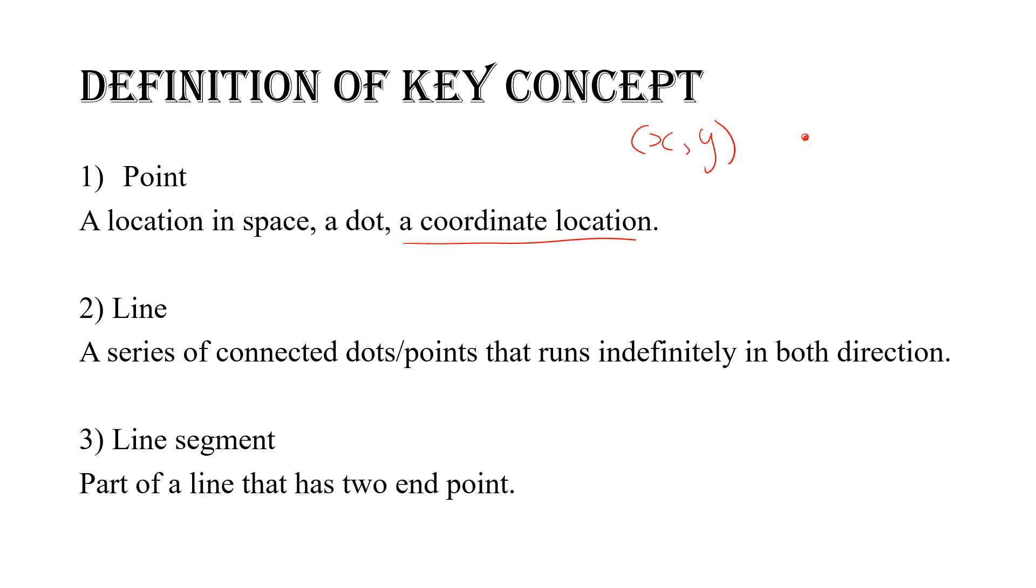A line is a series of connected dots or points that runs indefinitely in both directions. So, as I usually tell my students, a line is not something that you could draw. It's not something that you could write. You could try all you want. It's impossible. However, you could represent a line on paper. For example, if you have this line, this is the symbol in domain. It's supposed to be straight-hand sketching here. This is a representation of a line. We could draw the representation of a line. But it is impossible to draw a line in real life. Because, again, as the definition implies, a series of connected dots that runs indefinitely on both sides. So, this line here will go forever this way. And this point here will go forever that way.